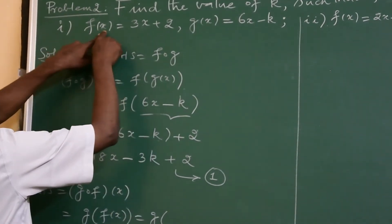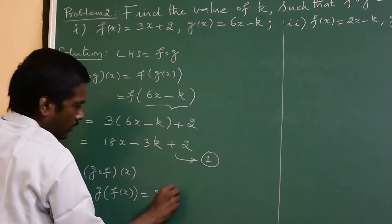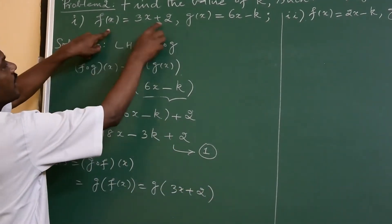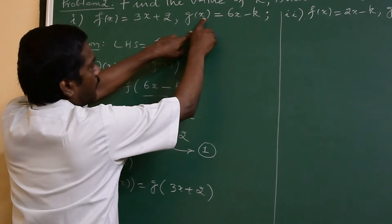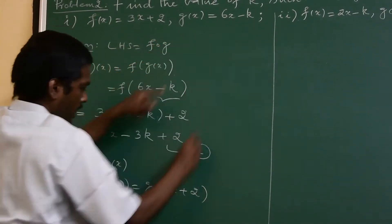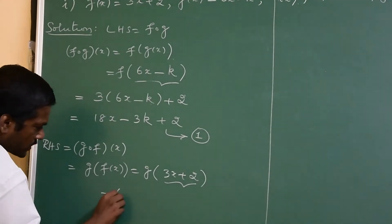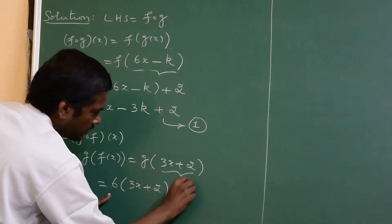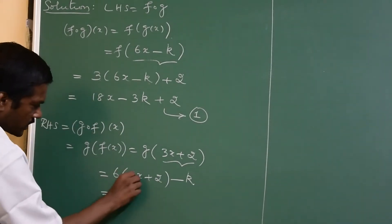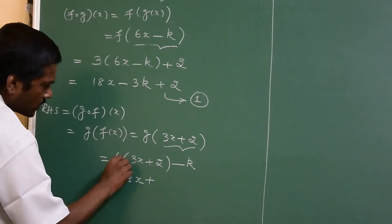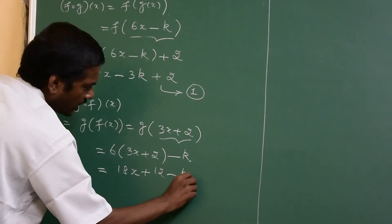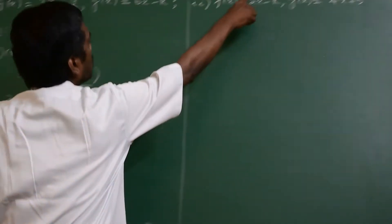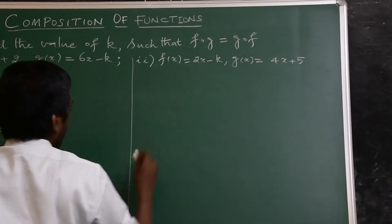f of x is 3x plus 2. We substitute f of x into g: g of (3x plus 2) means we multiply by 6, giving 6 times (3x plus 2) minus k, which equals 18x plus 12 minus k.